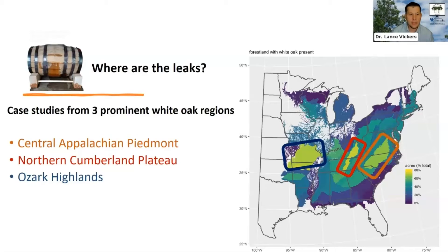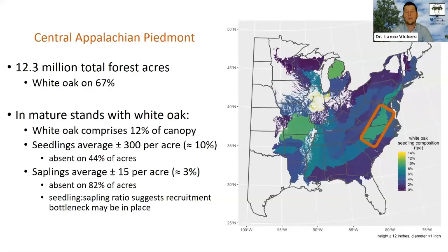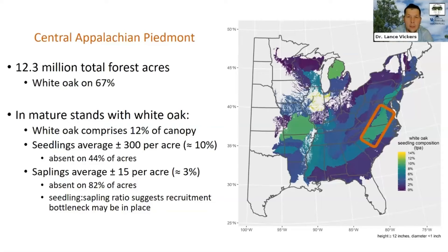We're going to zoom in and look at three case studies — three prominent White Oak regions — taking an east-to-west transect: the Piedmont, the Northern Cumberland Plateau, and the Ozark Highlands. In the Piedmont, which is 12.3 million acres with White Oak present on 67% of them, White Oak tends to comprise around 12% of the canopy in mature stands, with around 300 seedlings present per acre in the understory — about 10% of all understory stems, which matches the overstory composition pretty well.